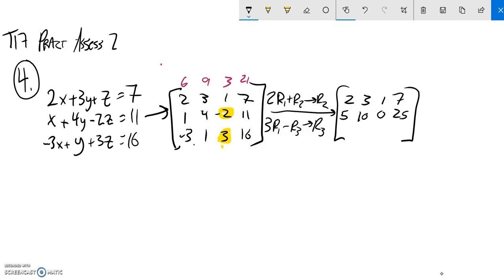And then I'm going to subtract. So, 3 times the first row minus the third row. Notice this is 6 minus negative 3, so that's a positive 9. 9 minus 1 is 8. 3 minus 3 is 0. And then lastly, 21 minus 16 is 5.